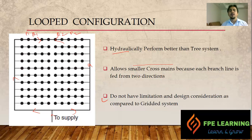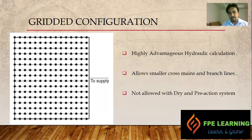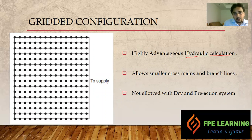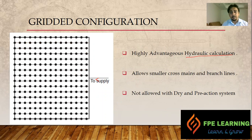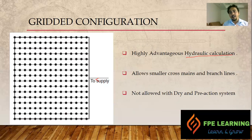The last one is the gridded configuration. When we talk about gridded, it is one of the best in terms of hydraulic calculation advantages. You can see the supply is coming from this side and the pipe is totally connected from one end to the other. For warehouses, retail shops, or any space where we can utilize this layout, I would prefer to go with the gridded one, because the fire pump capacity and pressure requirement will be less due to lower friction loss compared to the looped and tree systems.